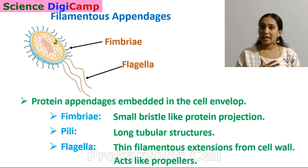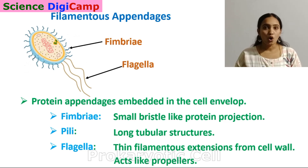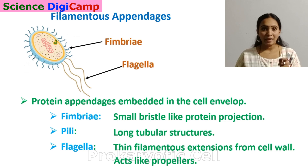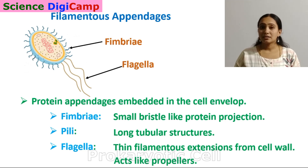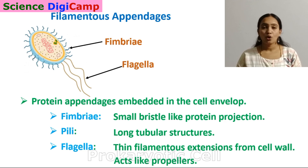Bacterial cells can be motile or non-motile. In motile bacteria, flagella are present. Flagella are long filamentous protrusions from the cell wall that act like propellers — their main function is locomotion, that is movement. Many bacteria use flagella to move towards or away from stimuli such as light, food, or toxins.